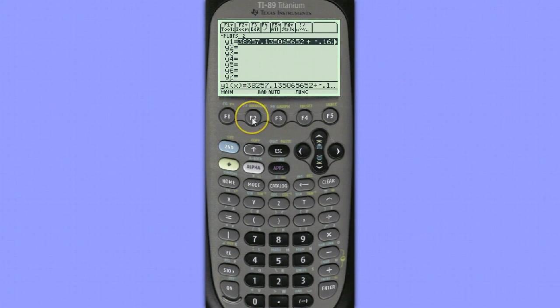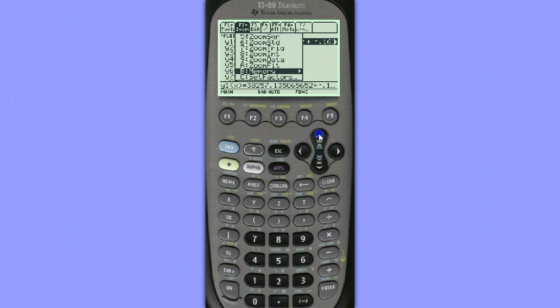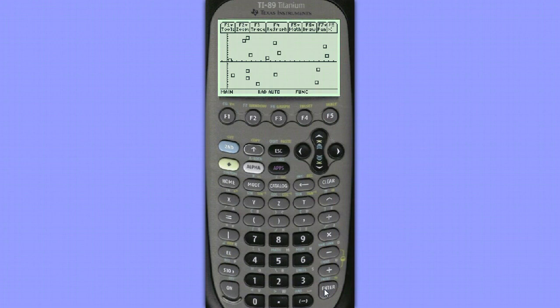Now I'm ready to choose zoom data. To do that I hit F2, choose option 9, zoom data, hit enter, and we have our scatter plot.